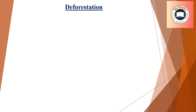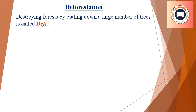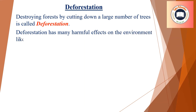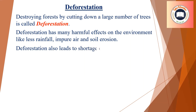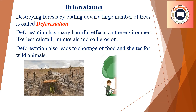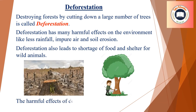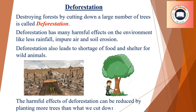Deforestation. Destroying forests by cutting down a large number of trees is called deforestation. Deforestation has many harmful effects on the environment like less rainfall, impure air, and soil erosion. Deforestation also leads to shortage of food and shelter for wild animals. The harmful effects of deforestation can be reduced by planting more trees than what we cut down.